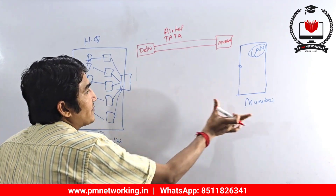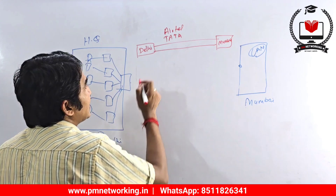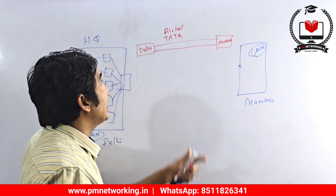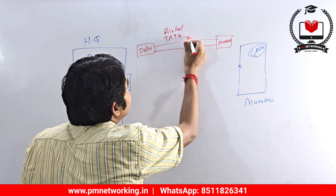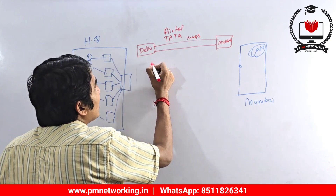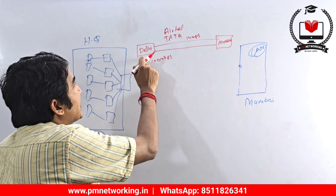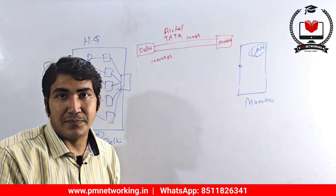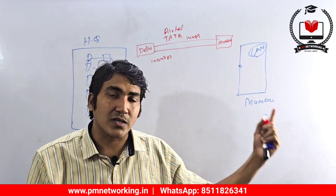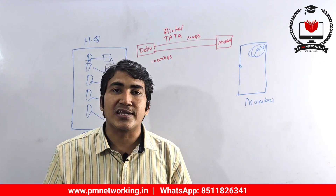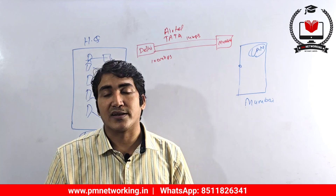If I want connectivity between my Delhi branch and Mumbai branch, I can purchase some bandwidth from Airtel. Airtel already has lots of bandwidth between Delhi and Mumbai — let's say total bandwidth is 1 Gbps. I can purchase 100 Mbps from Airtel — 'give me a 100 Mbps link between Delhi and Mumbai, I will pay you every month.' So I am purchasing connectivity between two points from a service provider. Whenever we purchase connectivity from a service provider, that type of network is known as WAN.